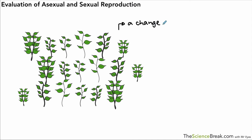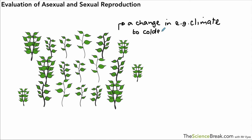Now if there was a change in the environment — for example, a change in the climate to a colder climate — because of this variation you're going to find that some of them are more able to survive than others.